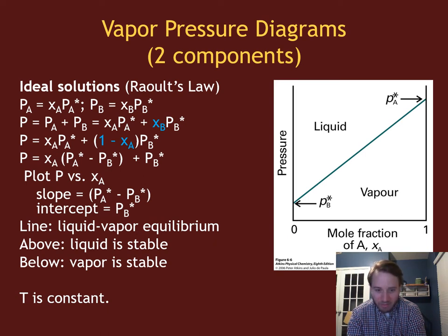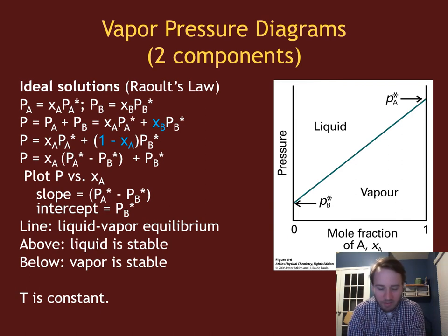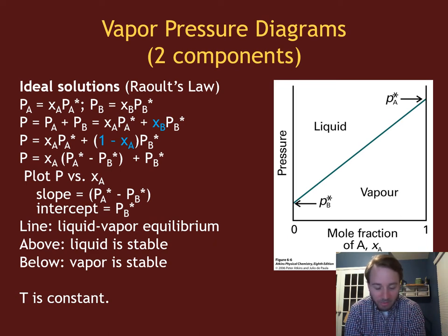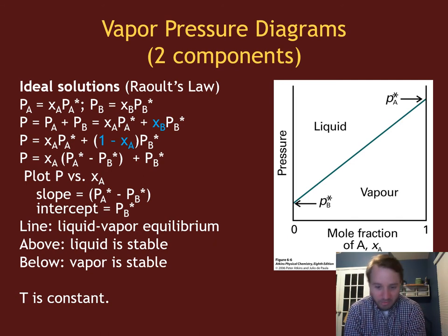This gives a straight line. Above this line the liquid phase is stable; below the line the vapor phase is stable. This is a normal phase diagram plotting pressure versus chemical composition at constant temperature. The phase boundary between liquid and vapor is related to the vapor pressure — that line represents the total vapor pressure of the mixture, giving the equilibrium between vapor and liquid phases. At higher pressures liquid is more stable, and at lower pressures vapor is more stable.